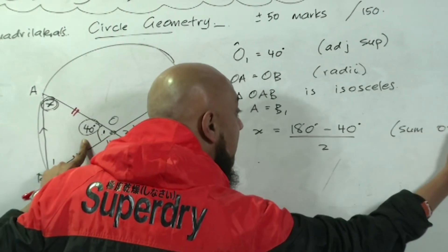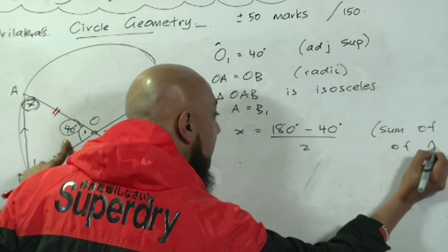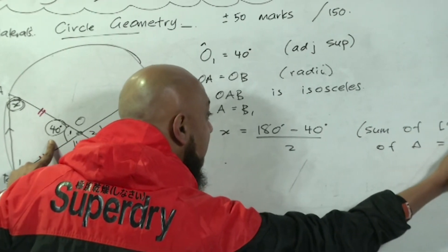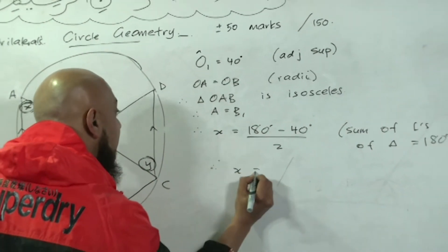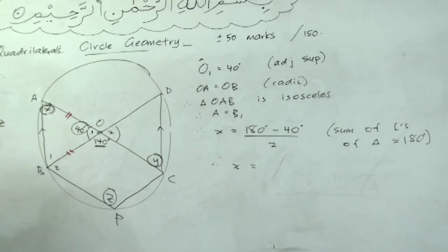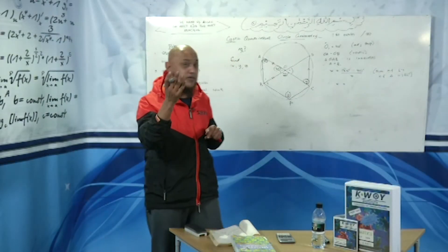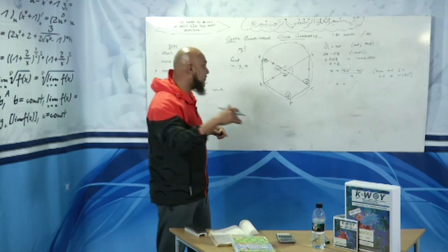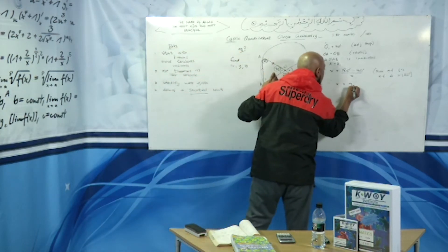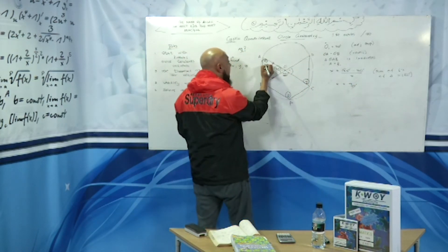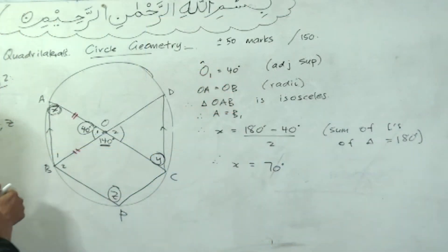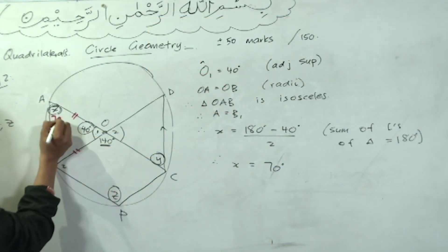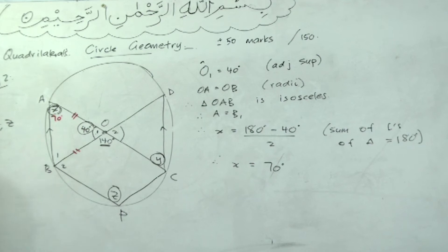Sum of angles of a triangle equal 180 degrees. Therefore, x is equal to—180 minus 40 is 140, 140 divided by 2 is 70 degrees. So x equals 70 degrees. We've got this one here to be 40, we got x to be 70.